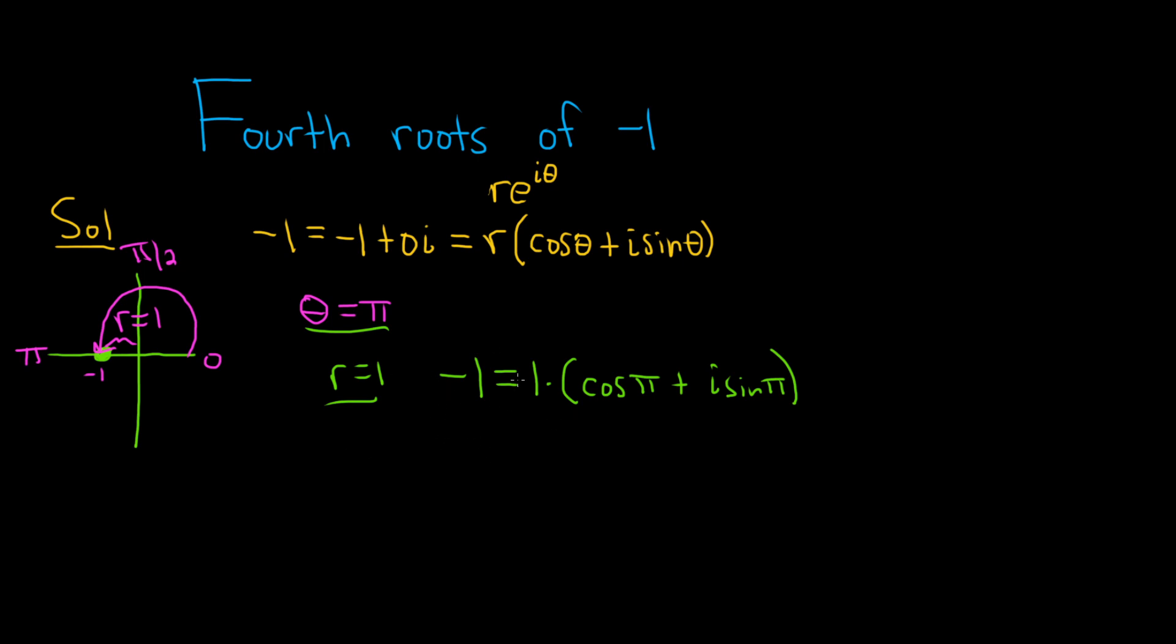And again, we didn't even need to write it this way. We just really need to figure out theta and r. So now we can use the formula for the roots. The formula is the following: the kth roots are given by z sub k, and it's equal to the nth root of r, where n is the roots we're looking for. In our case, n is 4.